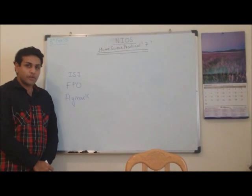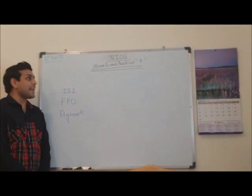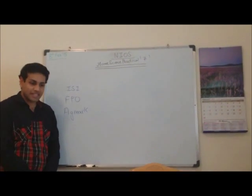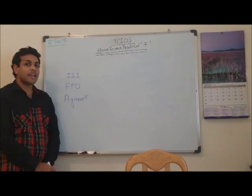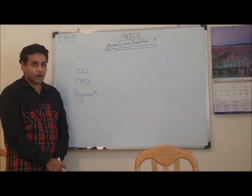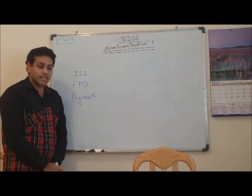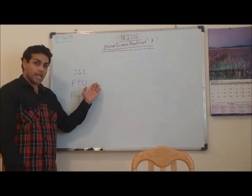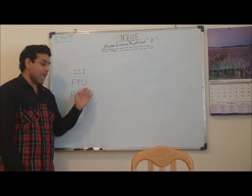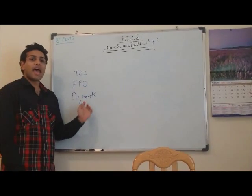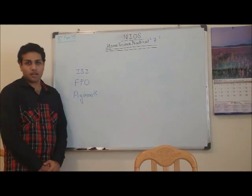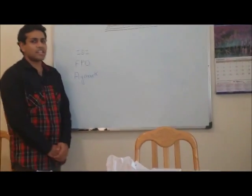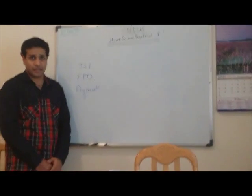Hi dear students, today we will be doing the NIO Homesense Practical No. 7, and that is to prepare a label for a product using the following quality marks: ISI, FPO, and AG mark. Let's first know where each is used and what these marks mean.